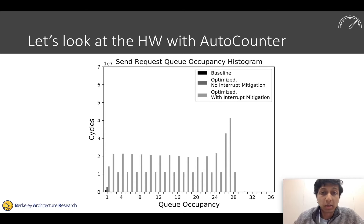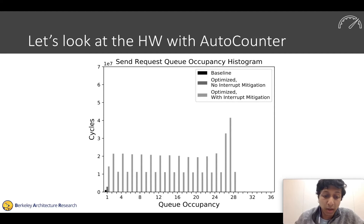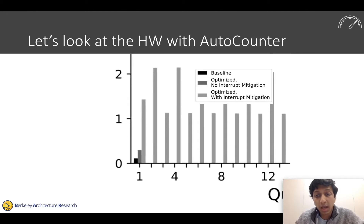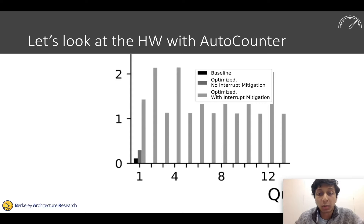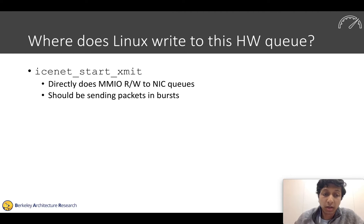After implementing checksum offloading, there's really no obvious software culprits to continue optimizing. So let's look at the hardware by injecting performance counters with AutoCounter. In particular, we look at the send request queue occupancy in the NIC — a histogram showing how occupied the queue is, where we write descriptors of packets we want to send. In our baseline case and optimized case without interrupt mitigation, this queue never contains more than one entry at a time, meaning we're not getting good batching effects. Ideally, software should write a bunch of packets for the NIC to send, then go do other work.